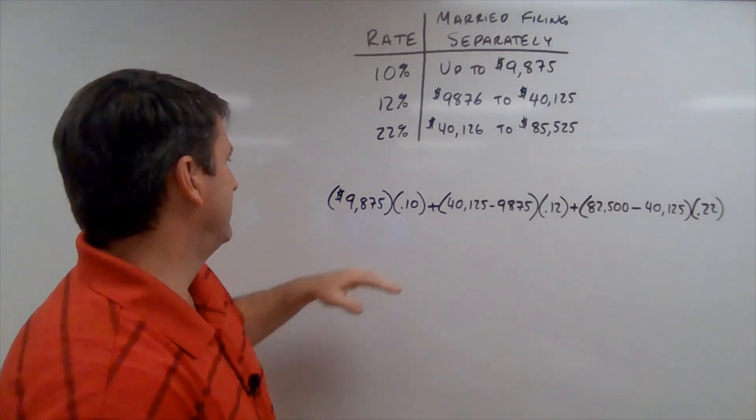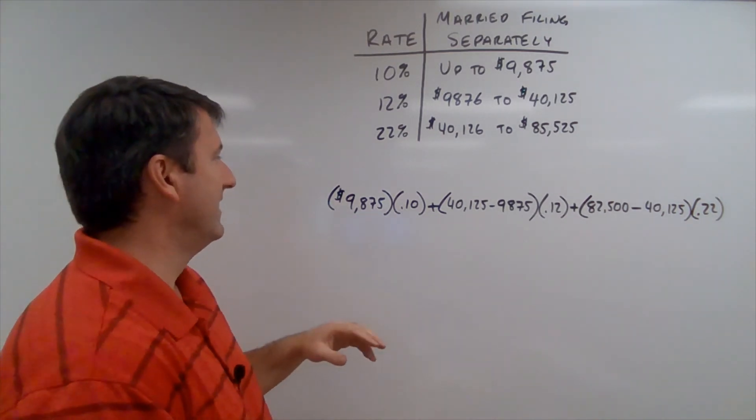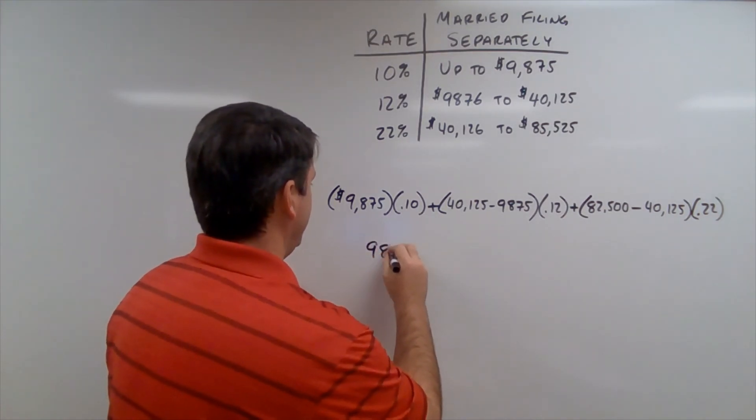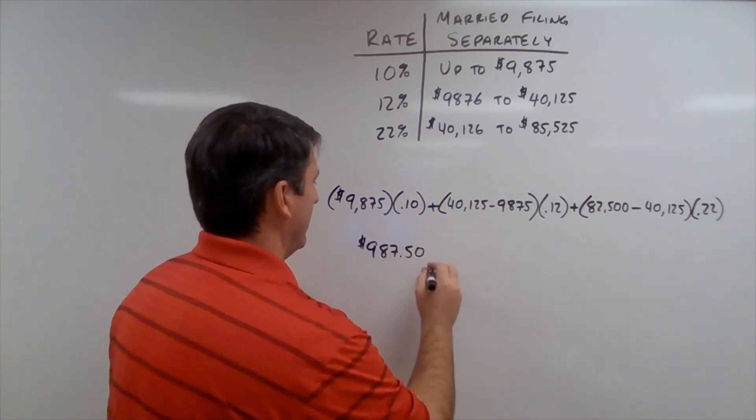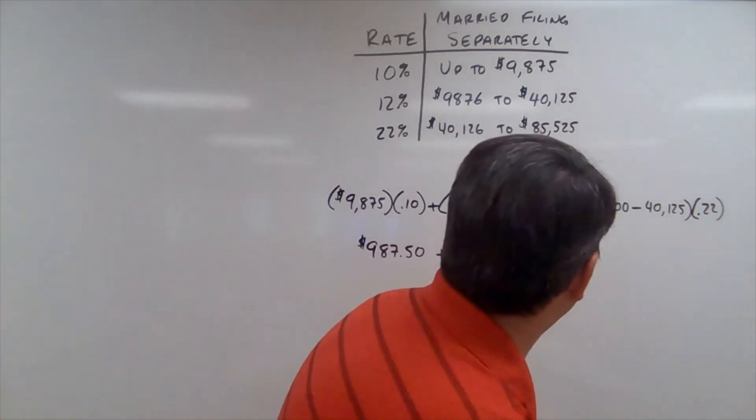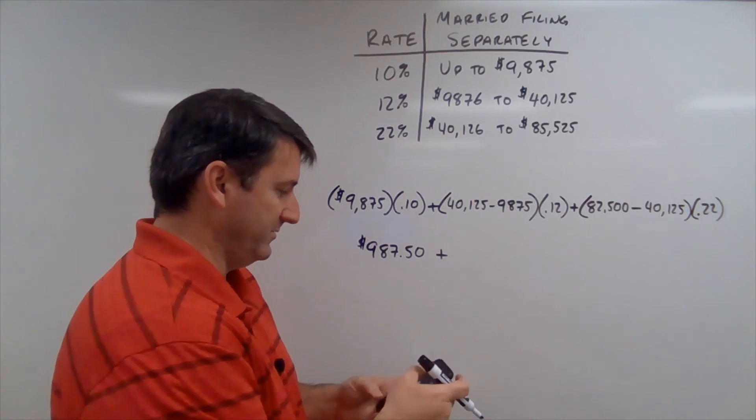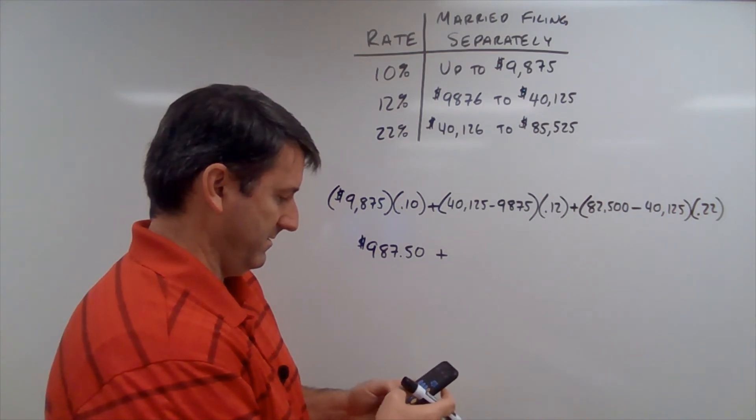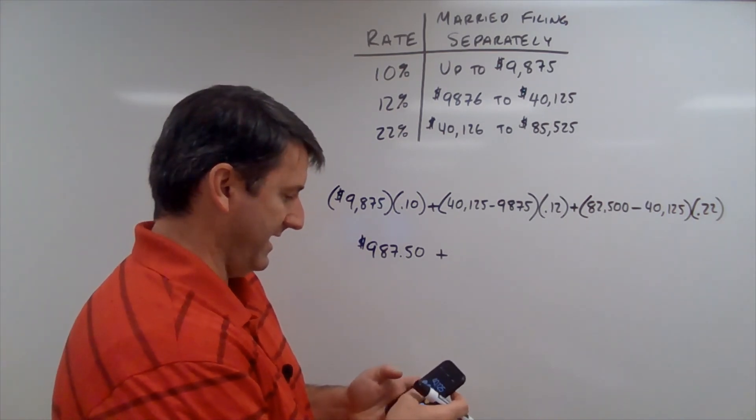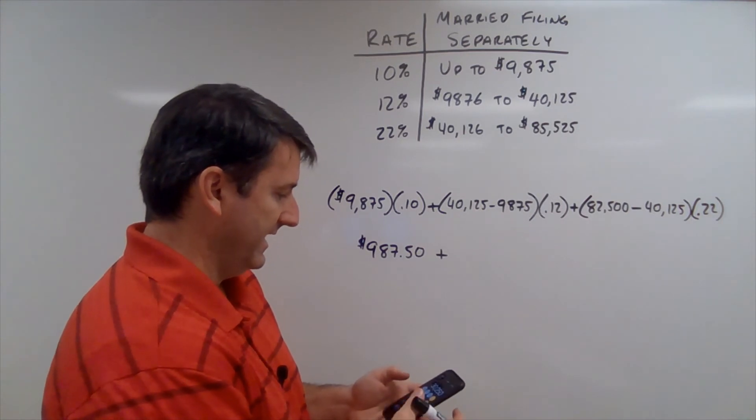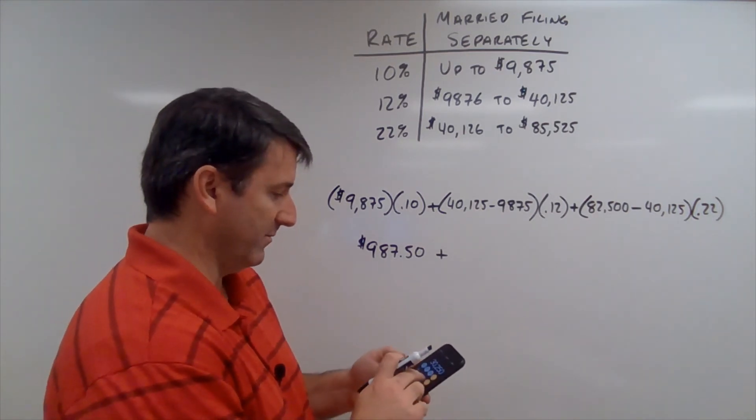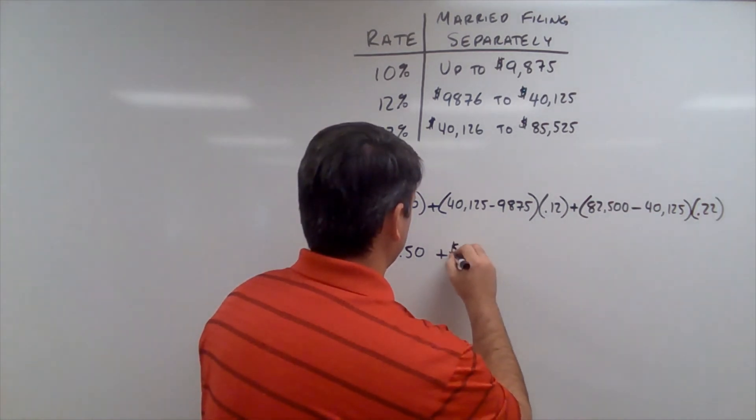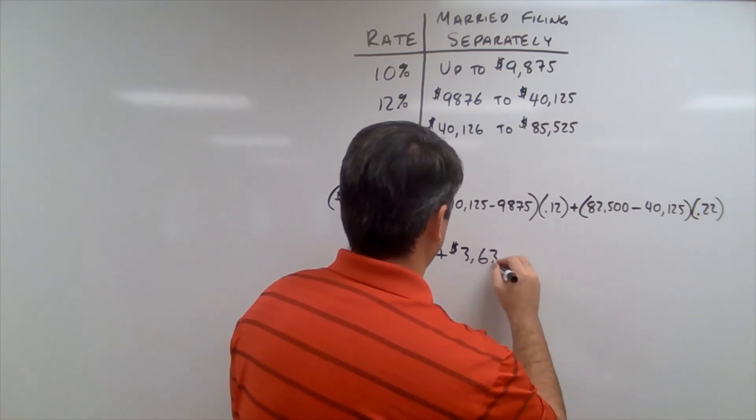All right. Now, let's calculate this. So, $9,875 times 10% is going to be $987.50. And then $40,125 minus $9,875 is $30,250. And we're going to tax that at 12%. That's going to be $3,630.